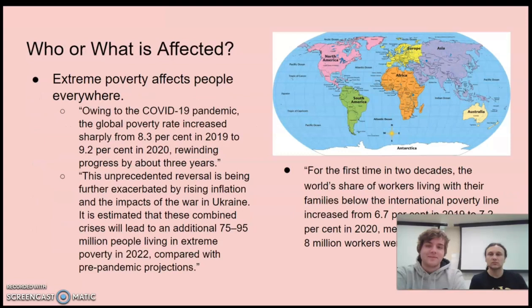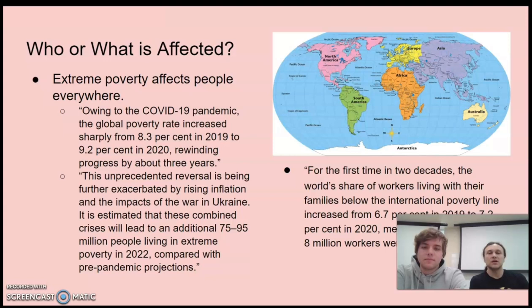So who is really affected by extreme poverty? When we talk about extreme poverty, you'll often hear the words 'global south,' which references many people in sub-Saharan Africa, South America, and South Asia, who are affected disproportionately. For the first time in two decades, the share of workers living below the international poverty line increased from 6.7% to 7.2%, pushing 8 million additional workers into poverty. The places most affected are underdeveloped nations, where the pandemic made existing poverty even worse.